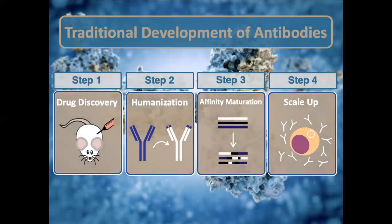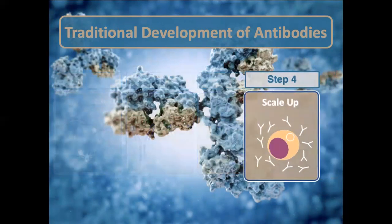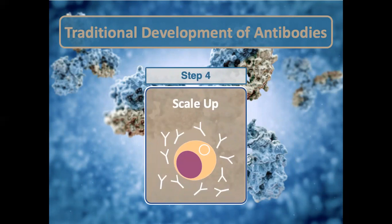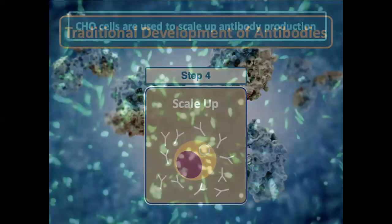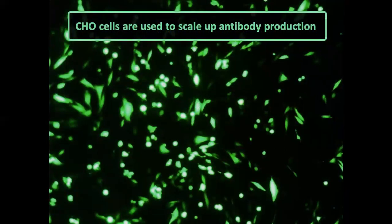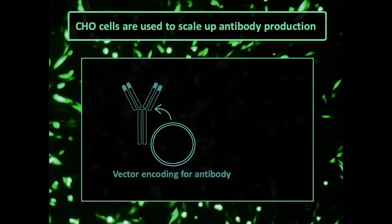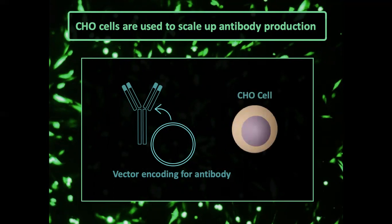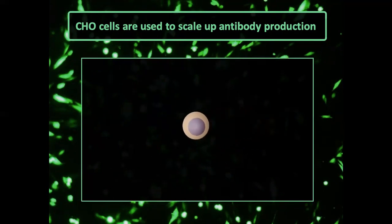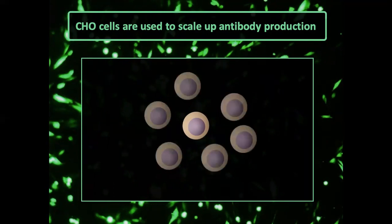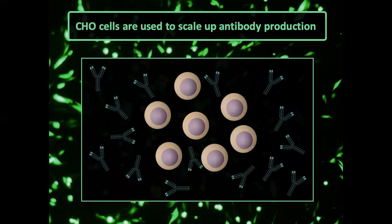Once we enhance the specificity of these antibodies, we go through the scale-up process — how do we mass-produce these antibodies so we have enough for clinical trials? The cell line generally used to scale up antibodies is Chinese Hamster Ovary cells, or CHO cells. You create a vector — a plasmid — that encodes for the antibody you want, insert that vector into a CHO cell, select the ones that were constructed properly, grow them up, and they secrete a large amount of the desired antibody.